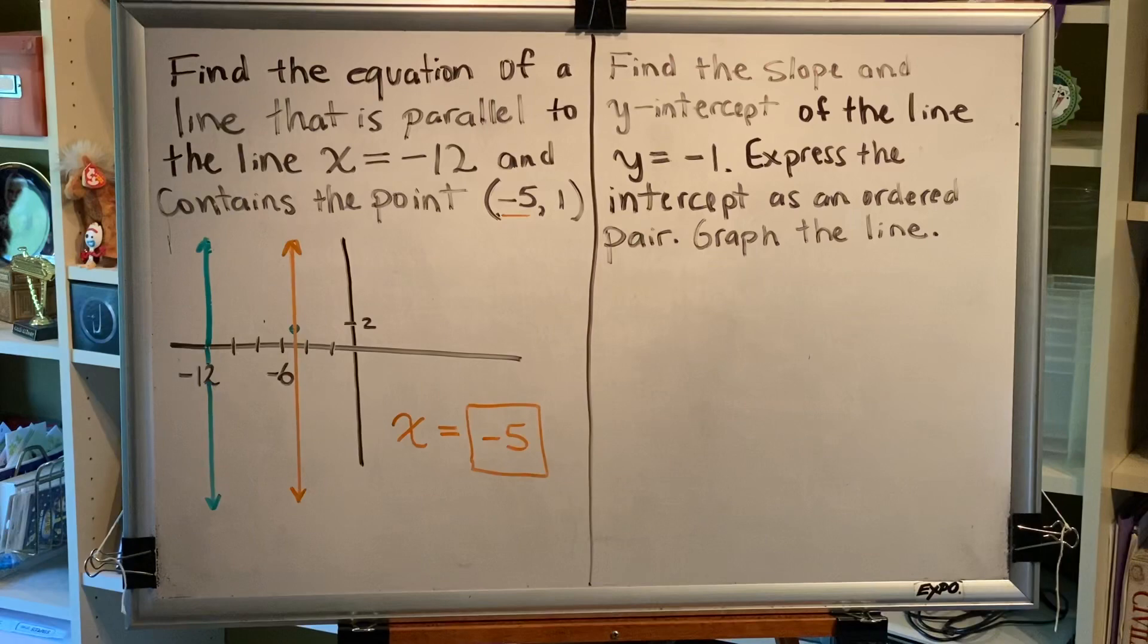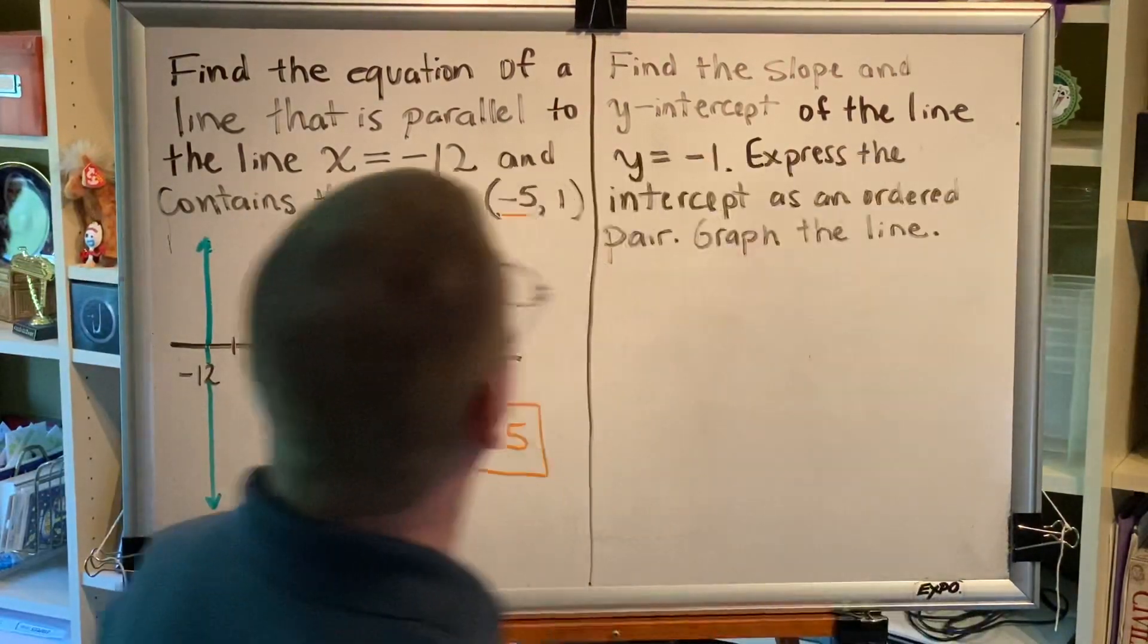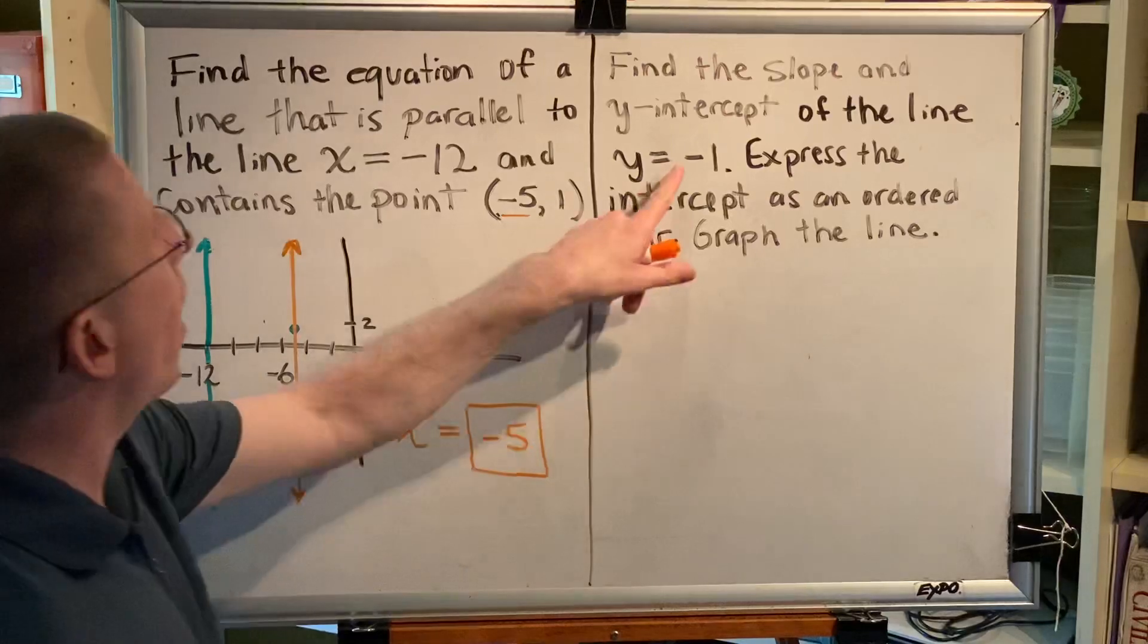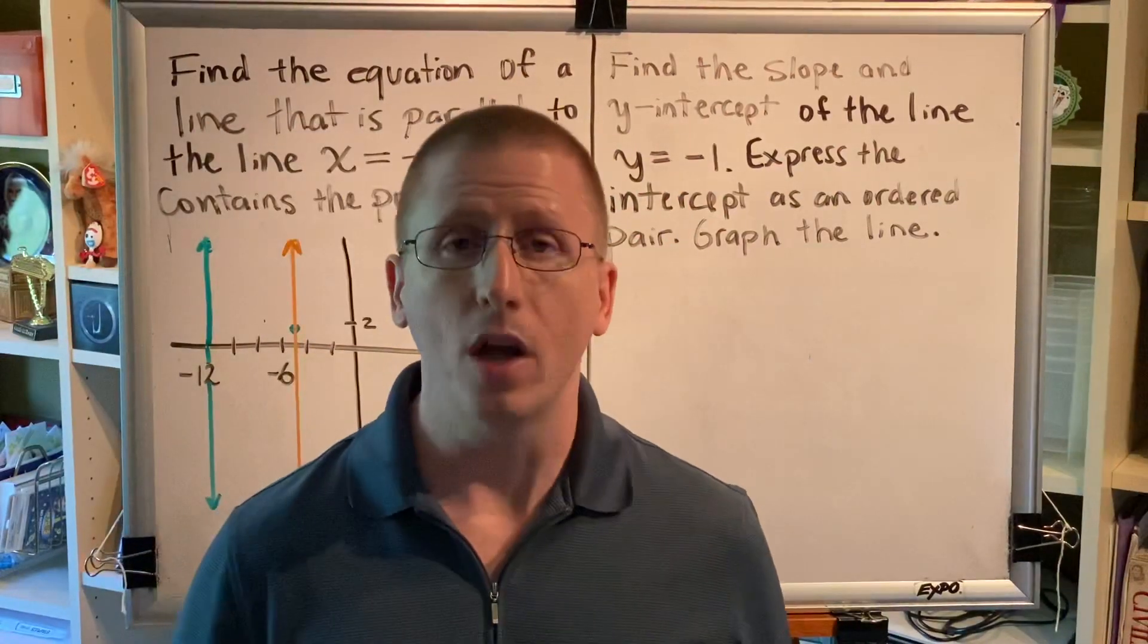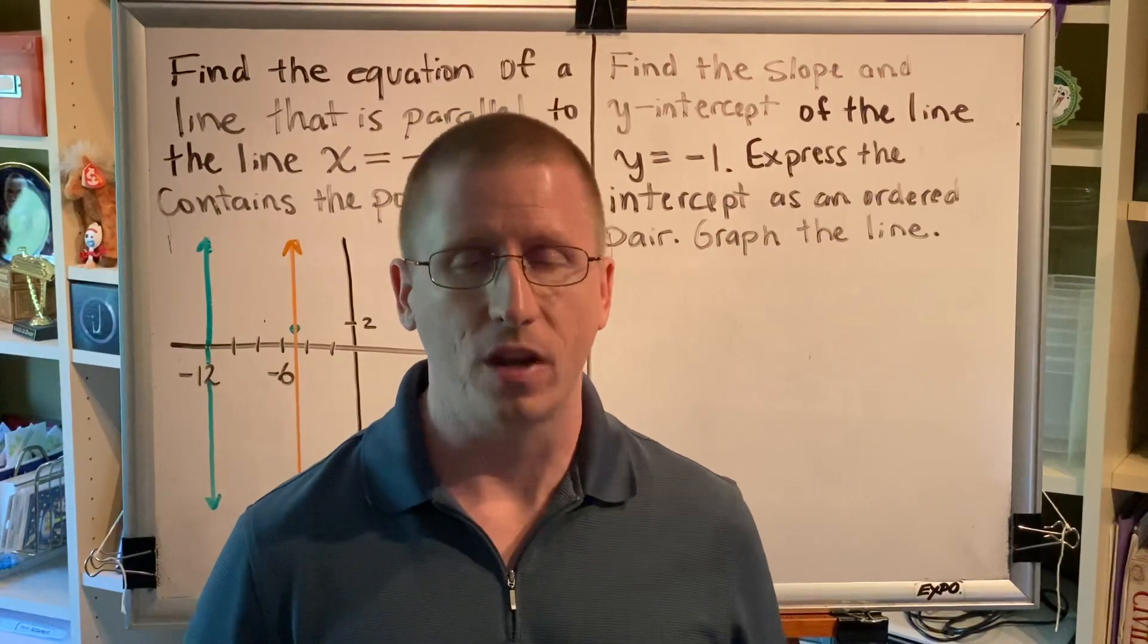Okay, let's look at our next problem. Find the slope and y-intercept of the line y equals negative 1. Express the intercept as an ordered pair. Graph the line. What do we know about y equals negative 1? Well, we know it's horizontal. And based on the four facts, that tells us some interesting things.